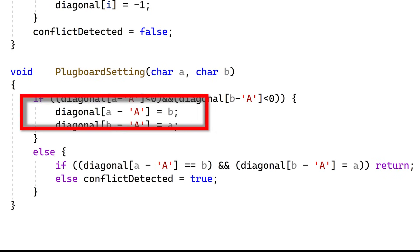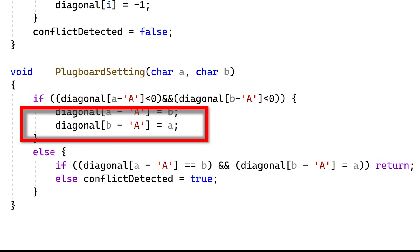The mapping for letter A in the array is set to the value of B, and similarly, the mapping for letter B in the array is set to the value of A. A maps to B, and B maps to A.